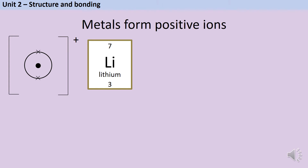We add the square brackets. Because we've taken something negative away, the lithium ion has a positive charge. The lithium atom still has three positive protons in its nucleus, but it now only has two negative electrons in its shells, so there's one proton that isn't cancelled out and the overall ion has a single positive charge.